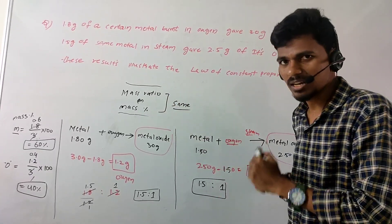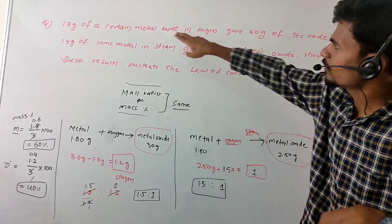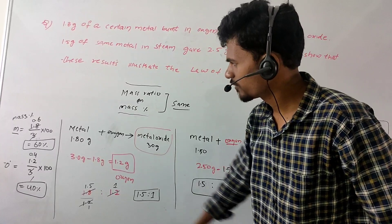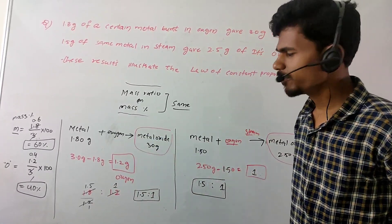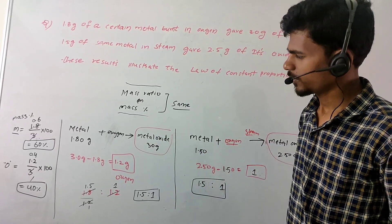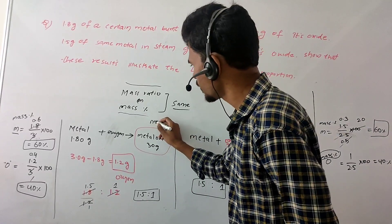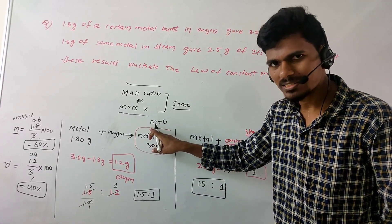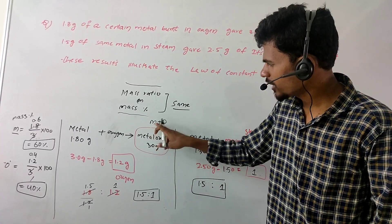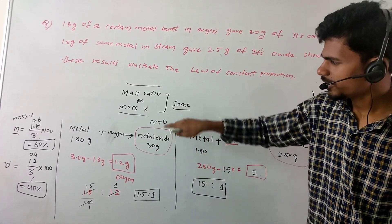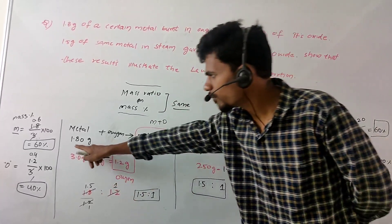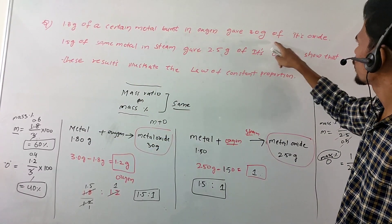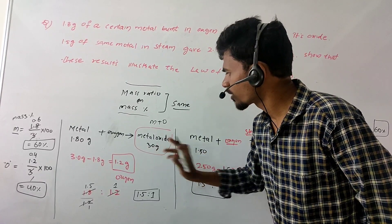See here — this mass ratio and mass percentage. For the first metal oxide: metal is 1.8 grams and metal oxide is 3.0 grams. Metal reacts with oxygen to form metal oxide. So we have 1.8 grams of metal and 3.0 grams of metal oxide total.